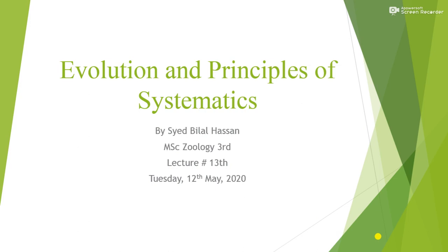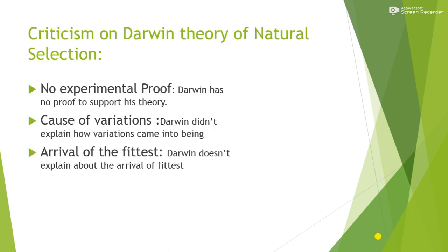Today is the 13th lecture of Evolution and Principles of Systematics, Tuesday 12th May 2020. We were discussing Darwin's theory of natural selection — Darwin made five observations, and on the basis of these five observations he drew important inferences. Another theory Darwin proposed in his book 'Origin of Species' was the theory of pangenesis, describing how acquired characters are transferred from parents to offspring, supporting Lamarck's idea of inheritance of acquired characters.